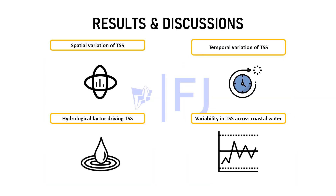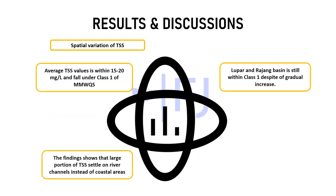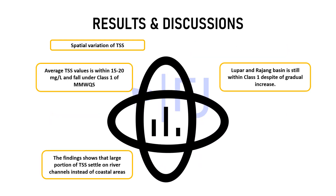Moving on to the results and discussion. The average TSS value is within 15 to 20 mg/L and falls under Class 1 of the Malaysian marine water quality standards. Lupa and Rajang Basin are still within Class 1 despite a gradual increase, and the findings show that a large portion of TSS settles in the river instead of coastal areas.